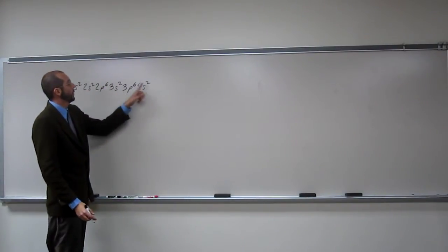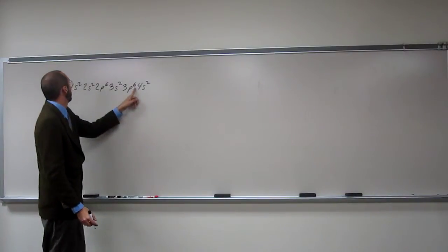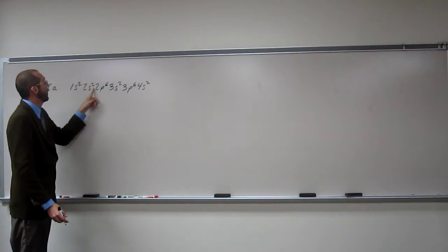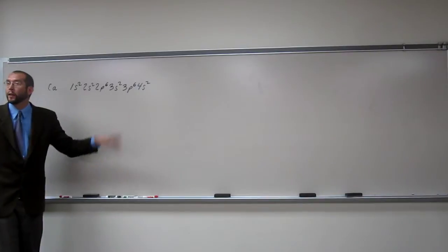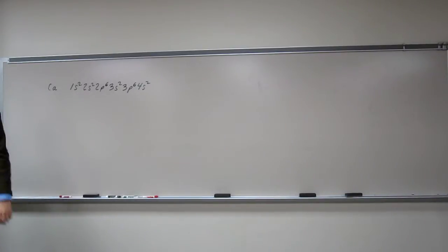So 2, 4, 10, 12, 18, 20. 10 plus 10 equals 20, so we got the right number.